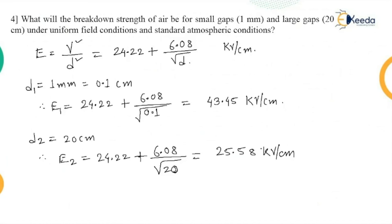As the distance increased from 0.1 cm to 20 cm — almost 200 times — the value of voltage decreased by almost 50 percent. The unit remains kilovolts per centimeter.